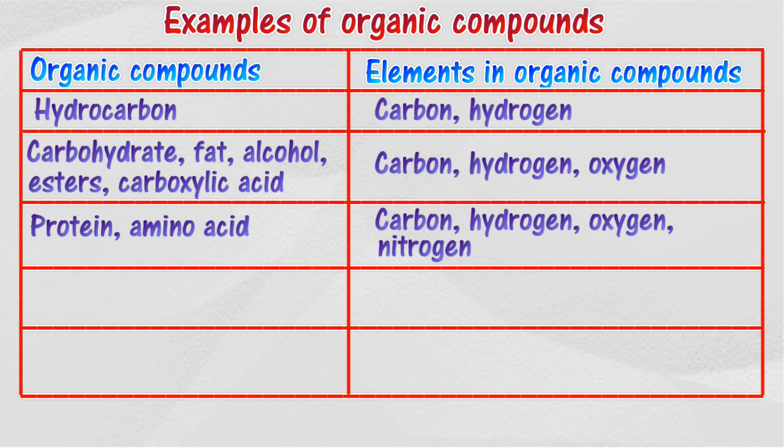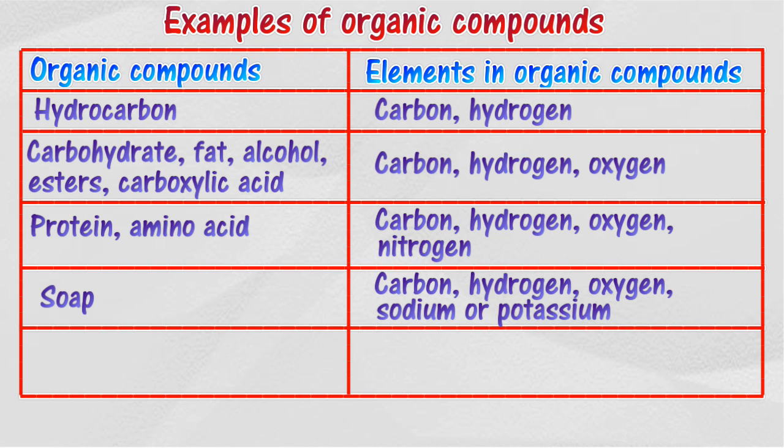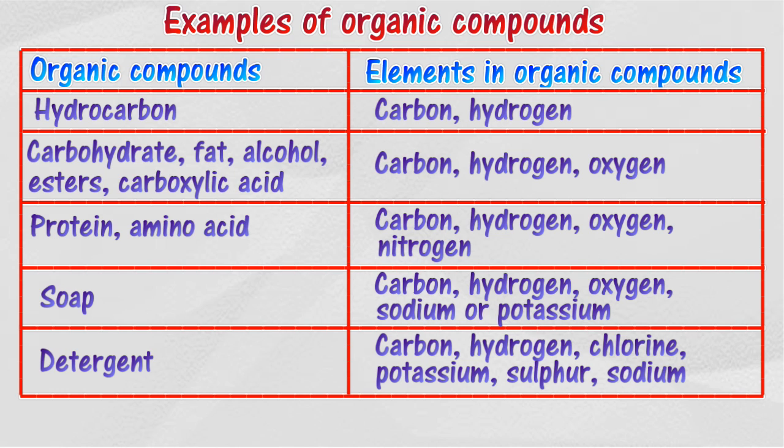Further examples of organic carbon compounds include proteins, fats, soap, amino acids, and enzymes. Petroleum, natural gas, and coal are also examples of organic carbon compounds that are used as fuel.